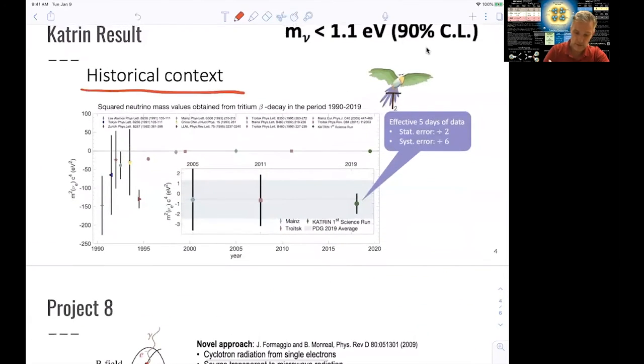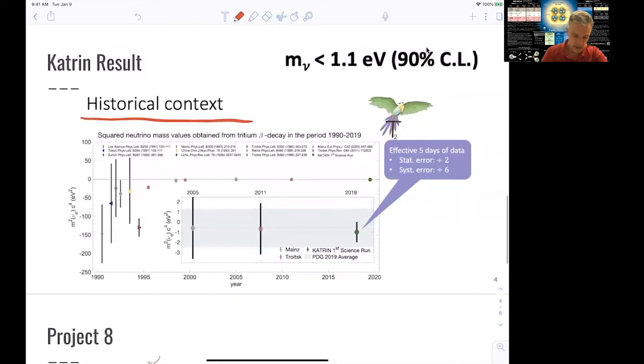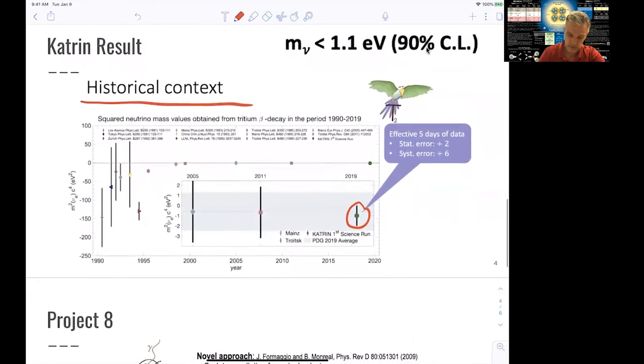To set the historical context in this discussion, we find that this latest result is an improvement of the order of factor of two compared to previous results by other experiments, which had a very similar job to measure the electron energy in beta decays, in the endpoint spectrum of beta decays.